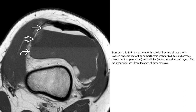Here are four examples showing the three distinct layers with different signal intensities. The first layer is fat, the second layer is serum, and the third is red blood cells.